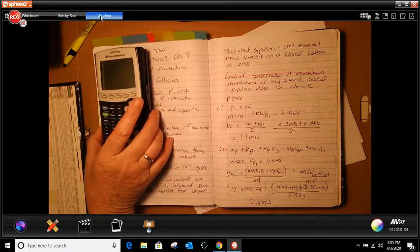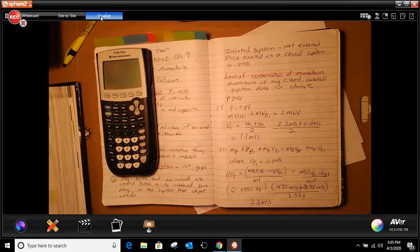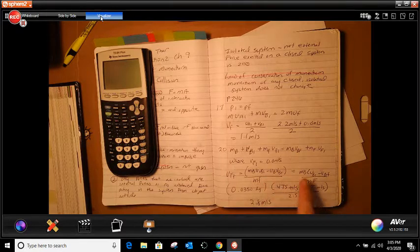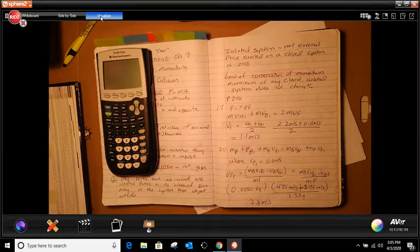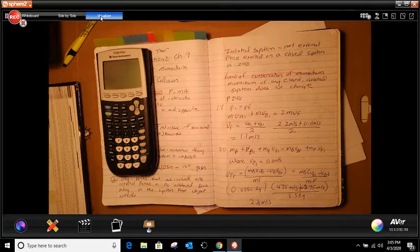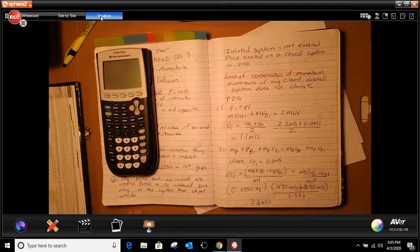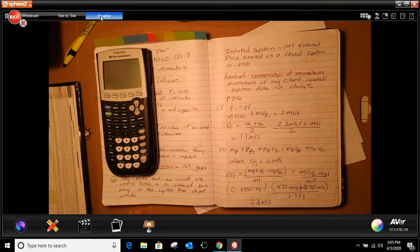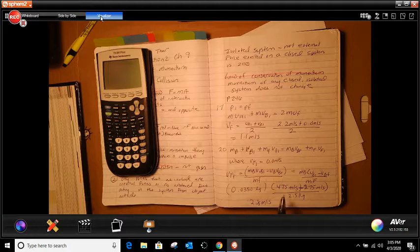Number 20 tells us, it says a 35 gram bullet moves at 475 meters and it strikes a 2.5 kilogram bag of flour at rest on ice. The bullet passes through the bag and it exits at 275 meters. How fast is the bag moving when the bullet exits?